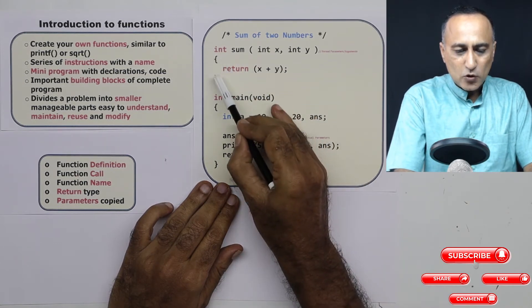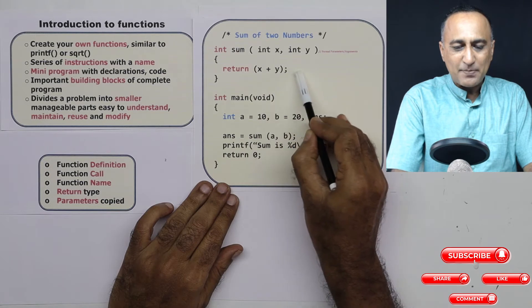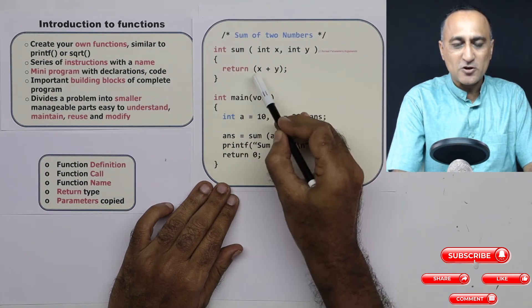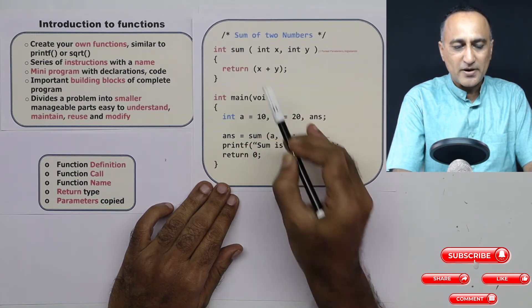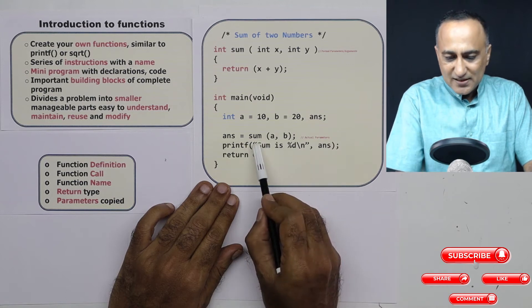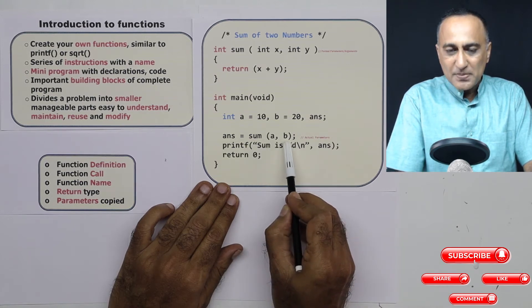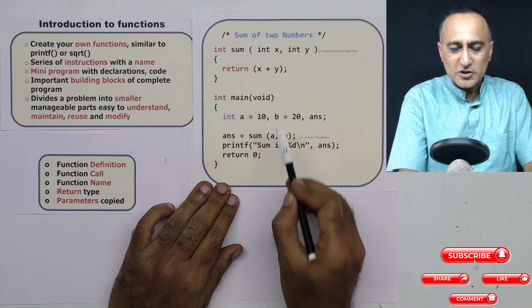So this code between these flower braces happens to be the definition of the function or the function code. Now, here sum a comma b is a call to this particular function.